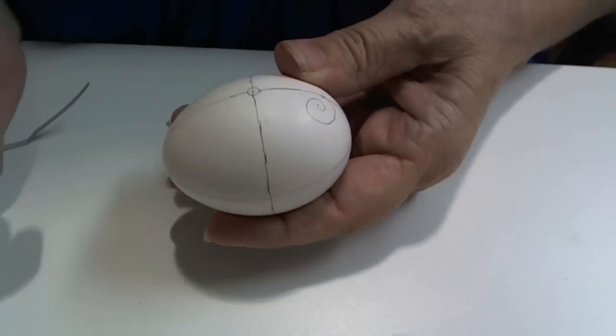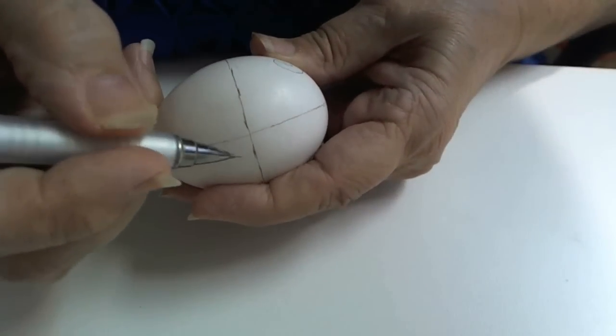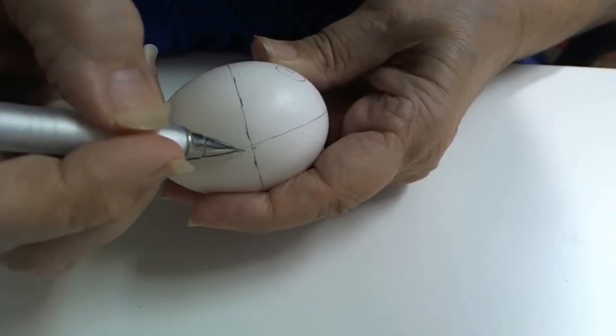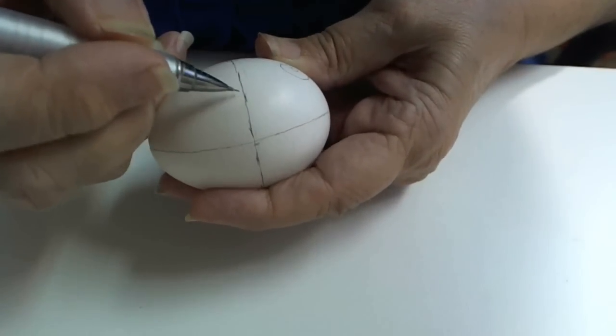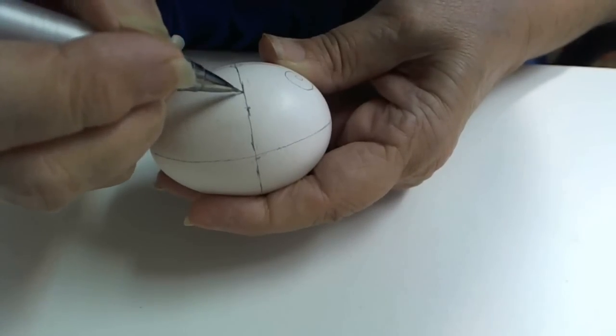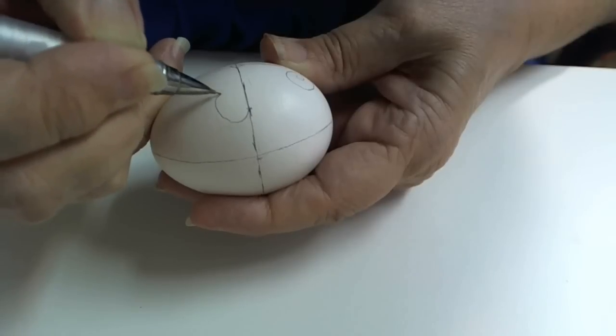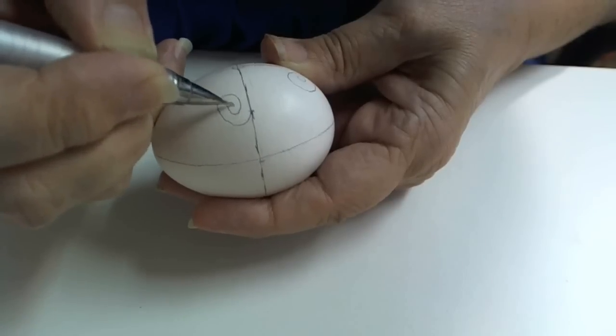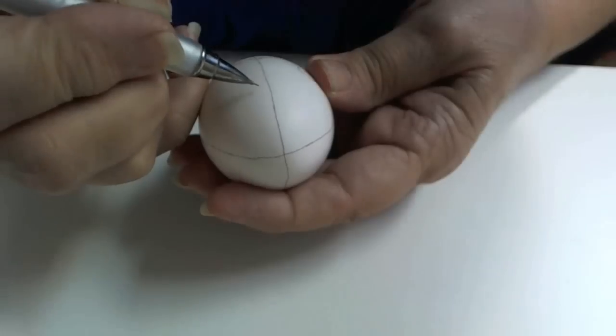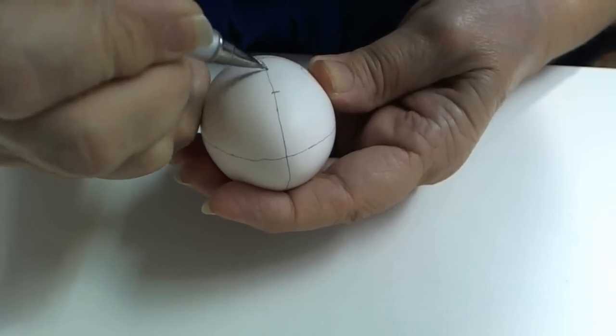I'm going to take my pencil, run it up and make a curly cue. We will do this on both sides.